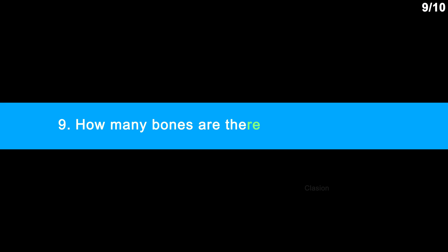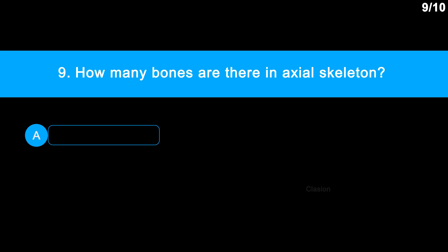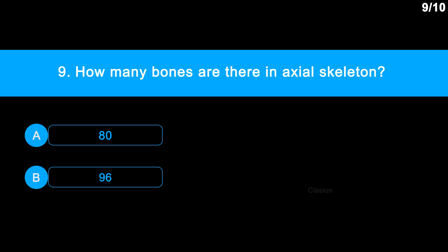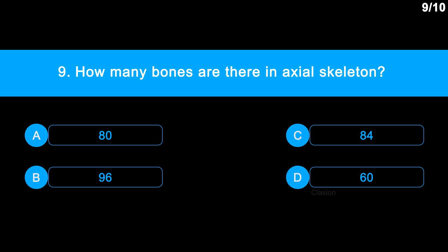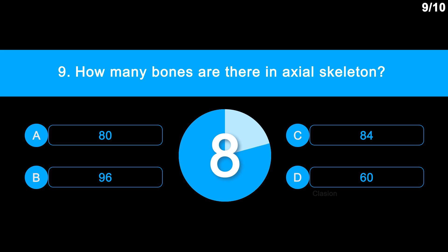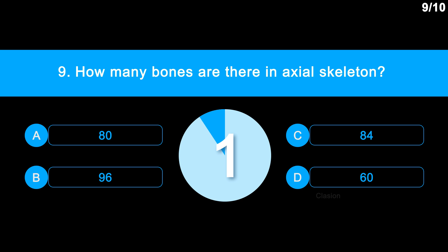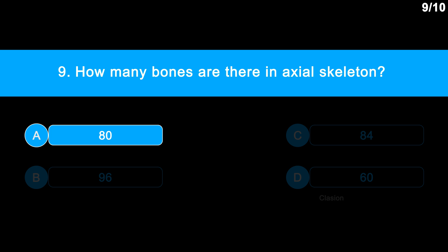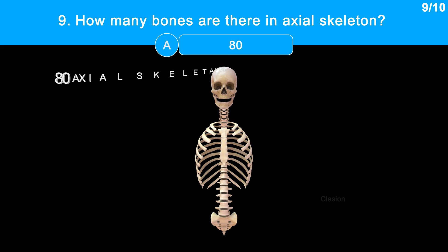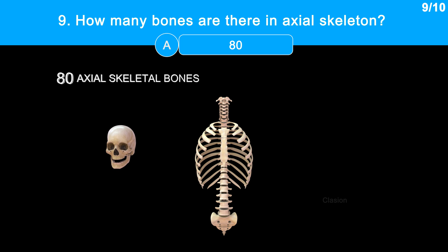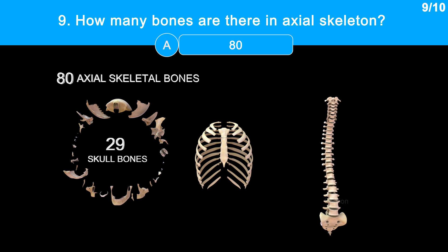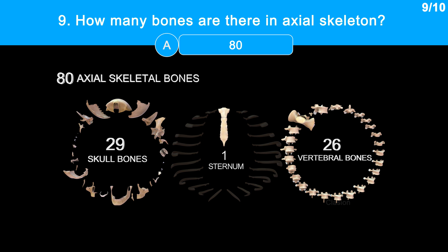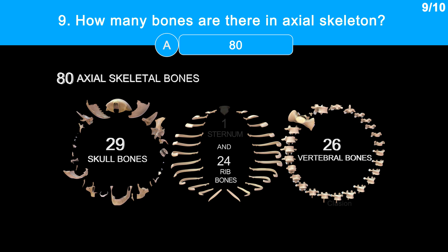Question 9: How many bones are there in the axial skeleton? Option A, 80. Option B, 96. Option C, 84. Option D, 60. The correct answer is option A, 80. Let's count them. There are 80 bones in the axial skeleton: 29 skull bones, 26 vertebrae bones, 1 flat bone sternum, and 24 rib bones.